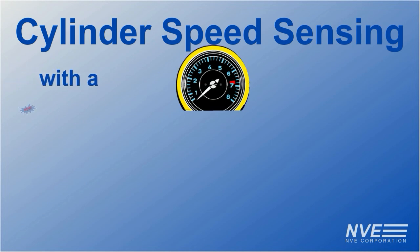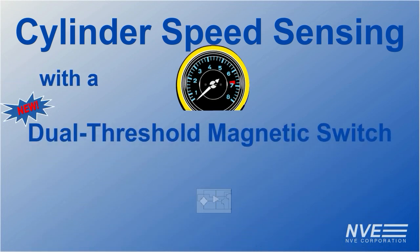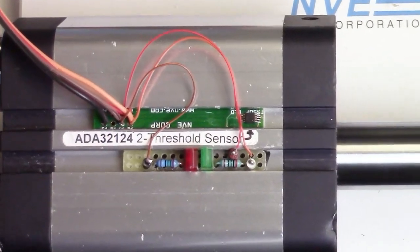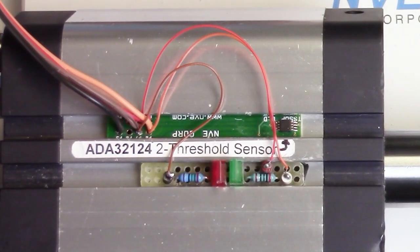We're demonstrating a new dual-threshold magnetic switch sensor to measure the speed of a pneumatic cylinder. The ADA32124 is mounted on a six millimeter wide breakout board which fits in the cylinder slot. Two LEDs are connected to the two threshold outputs.